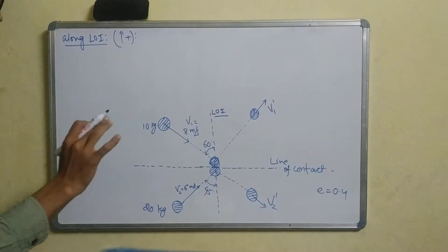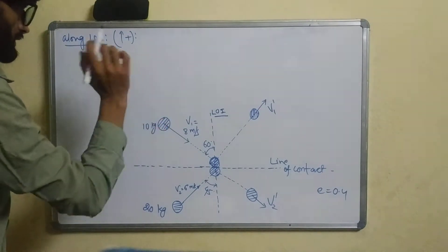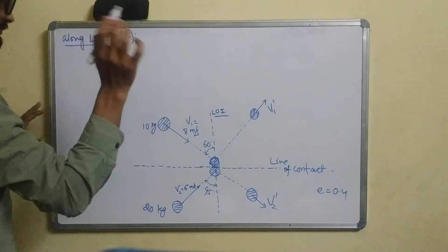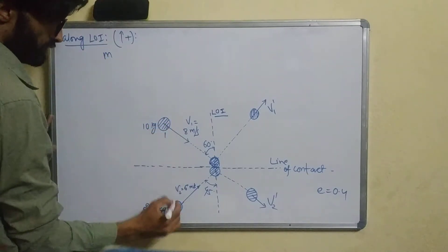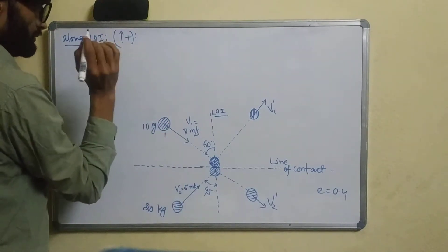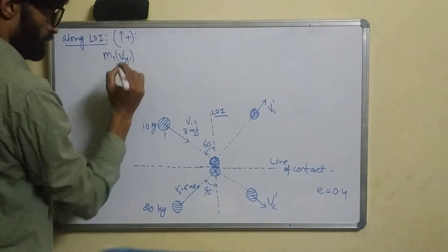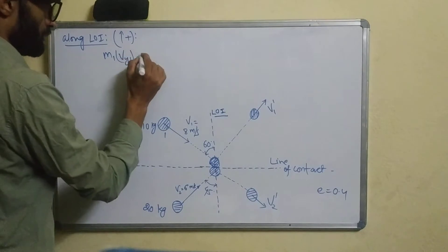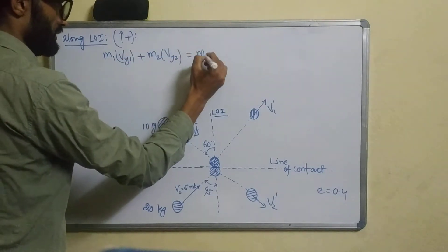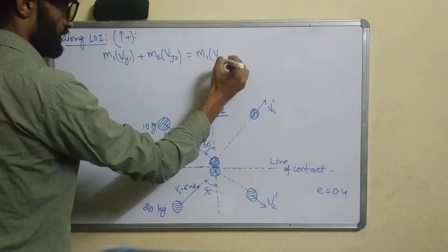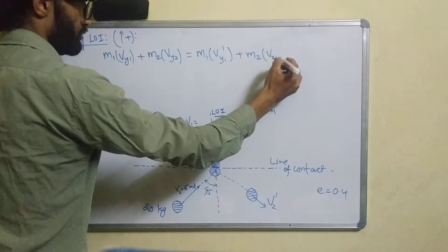We need to take x and y components. Looking at the initial momentum, particle 1 and particle 2 are considered. We write the y-momentum equation: m1·v1y + m2·v2y = m1·v1y' + m2·v2y'.